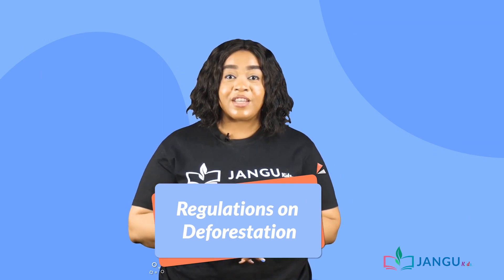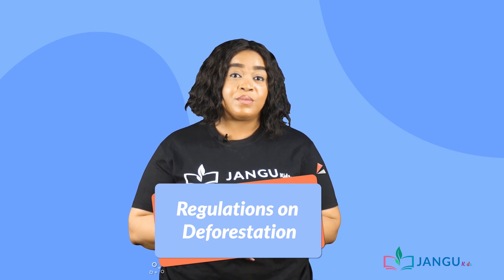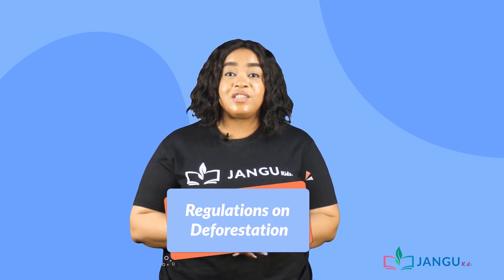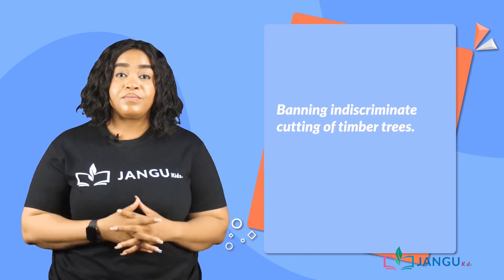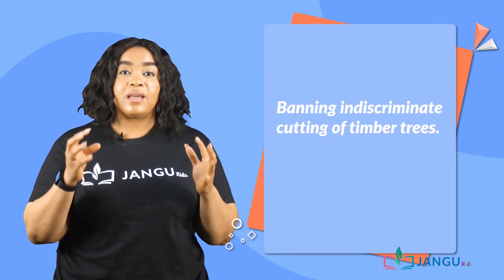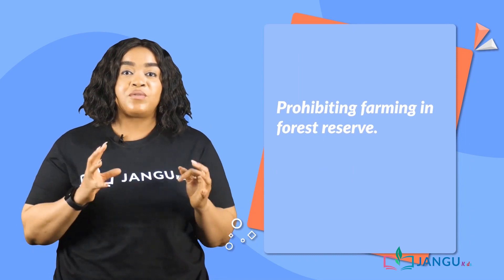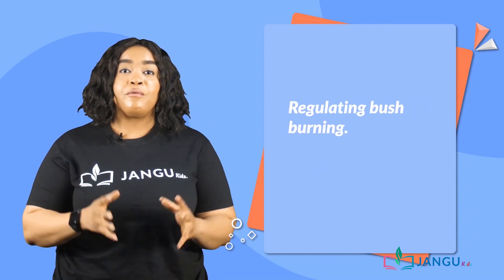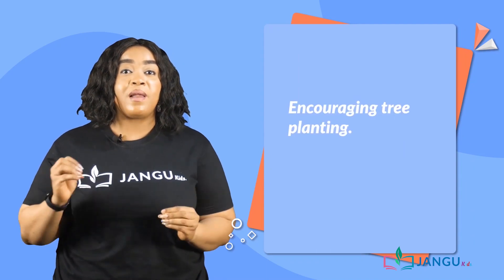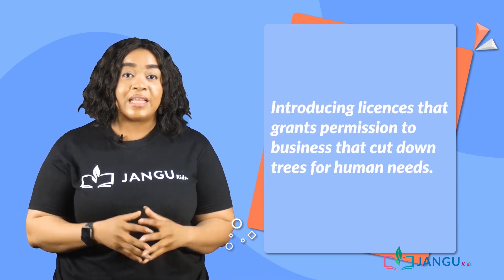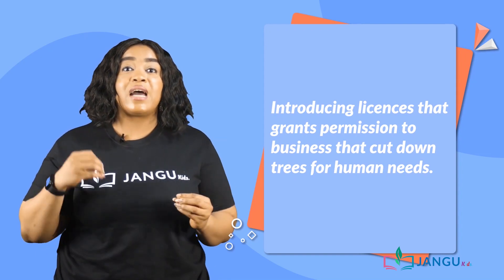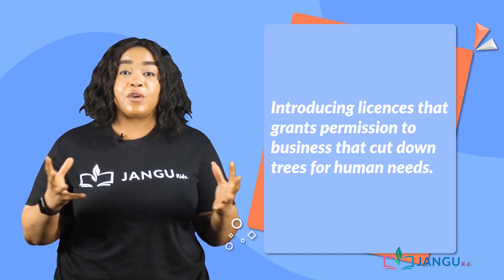Some official regulations made by the Nigerian government to prevent people from engaging in activities leading to deforestation include: banning indiscriminate cutting of timber trees, prohibiting farming in forest reserves, regulating bush burning, encouraging tree planting, and introducing licenses that grant permission to businesses that cut down trees for human needs.